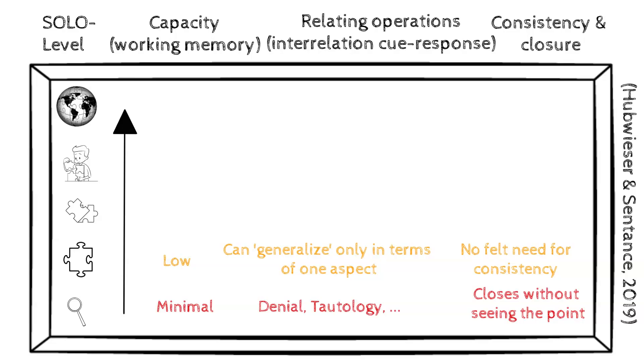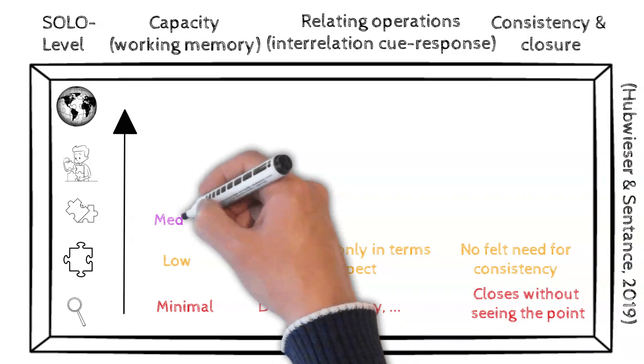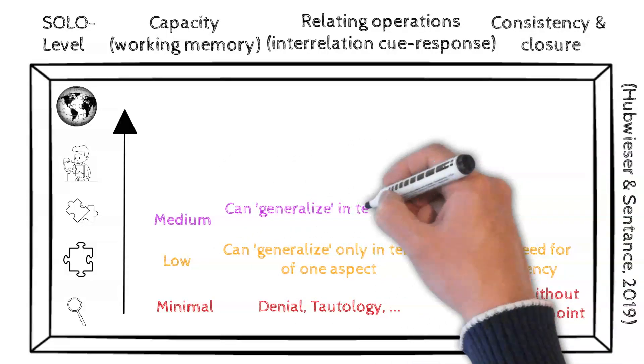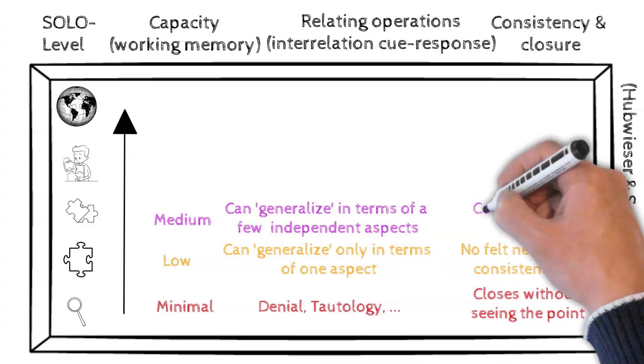At the multi-structural level, learners process several elements but don't connect them. Responses may be correct but read like a list, lacking coherence.